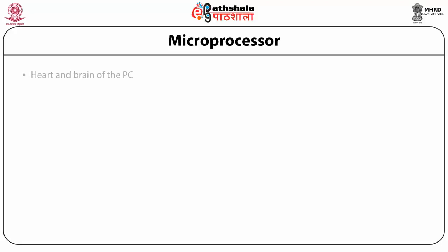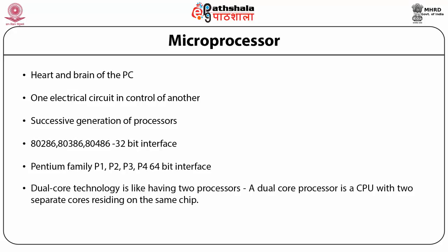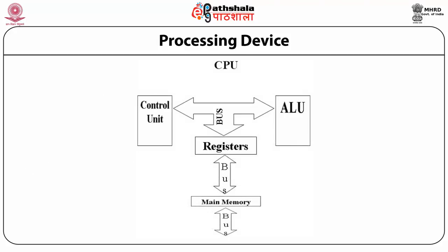The microprocessor is considered the brain and heart of the PC. Successive generations of processors include the 80286, 80386 and 80486 with 32-bit interfaces, followed by the Pentium family P1, P2, P3 and P4 with 64-bit interfaces, and then dual-core technology. A dual-core processor is a CPU with two separate cores residing on the same chip. The CPU consists of a control unit that handles instructions, an ALU handling mathematical and logical processing, registers for temporary memory storage, and main memory for long-term storage. Buses are the communication channels between these components.